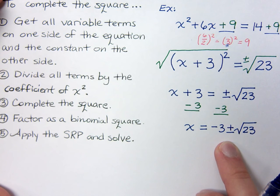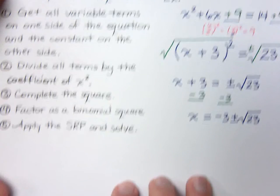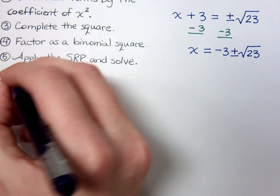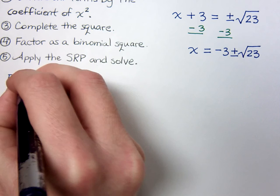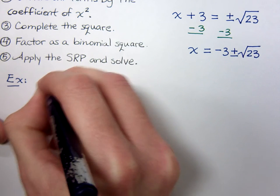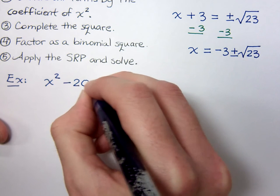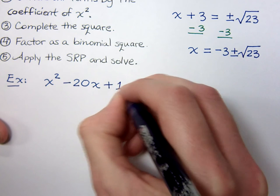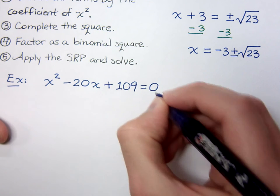Let's make this a little bit more challenging — well, it's really not too bad. Let's do another example: x squared minus twenty x plus one hundred nine equals zero.